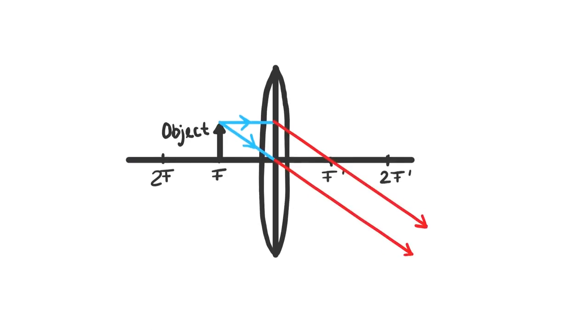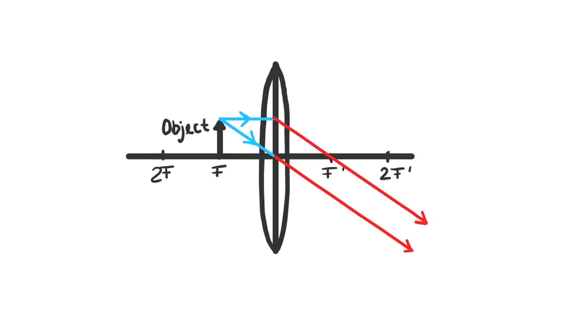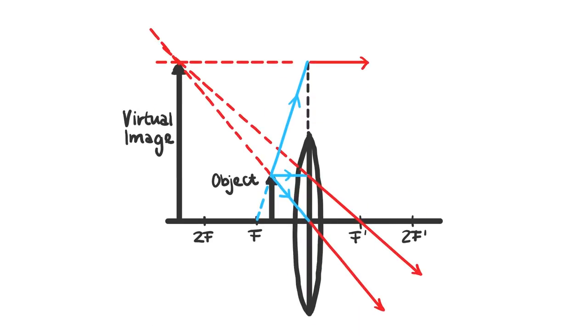When the object is placed on F, there is no image at all as there is no interception point. When the object is placed between F and the lens, that means that the image is behind the object. This is how magnifying glasses work.